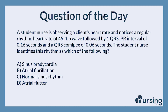A student nurse is observing a client's heart rate and notices a regular rhythm, heart rate of 45, one P wave followed by one QRS, PR interval of 0.16 seconds, and a QRS complex of 0.06 seconds. The student nurse identifies this rhythm as which of the following?